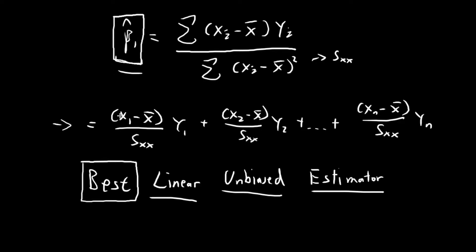You can have other linear combinations of y terms which would result in an unbiased estimator for beta 1, but they will always have a higher variance than beta 1 hat itself. When you're considering an estimator, you want to have low variance because that gives you more consistent results. This is essentially what the Gauss-Markov theorem is trying to tell us. The expression best linear unbiased estimator is commonly abbreviated as BLUE, so this might be easier to memorize.